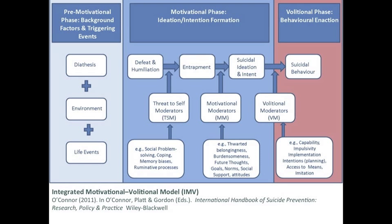The third part of the model is the volitional phase. This overarching framework draws directly from the theory of planned behaviour because it argues that there are factors which determine whether you'll act on your thoughts. The volitional factors are different from the factors which determine whether you'll have thoughts of suicide. So the key distinction is between factors associated with the development of suicidal thinking — the motivational phase — and factors which determine whether those ideations are translated into actual behaviour.